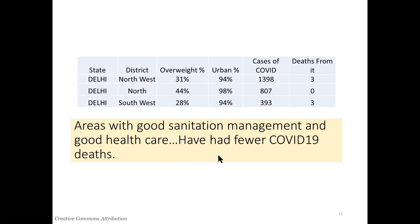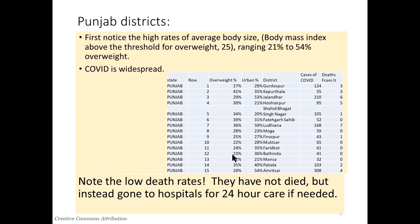It appears that areas with good sanitation management and good health care had fewer COVID-19 deaths in that year, but it all depends what you compare it to. Looking at Punjab, for example, in the various districts you have relatively very high levels of overweightness — overweight is not the same as obesity, the cutoff level is lower on BMI, please see the paper. The urban rates are also quite high, and sadly there were deaths in the Punjab.